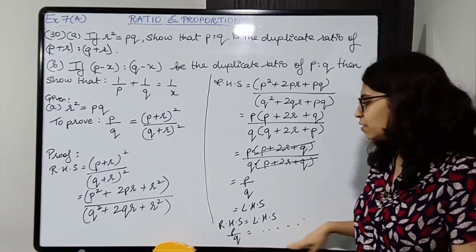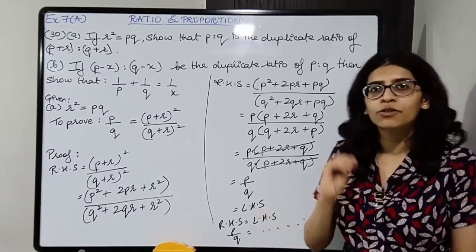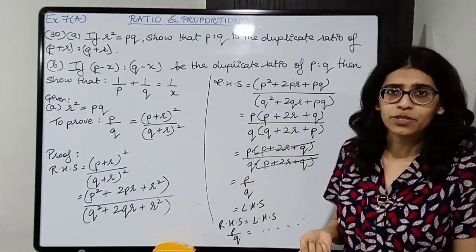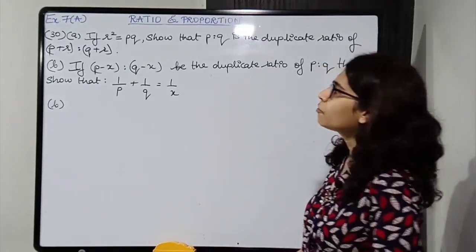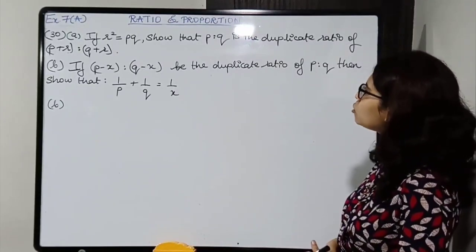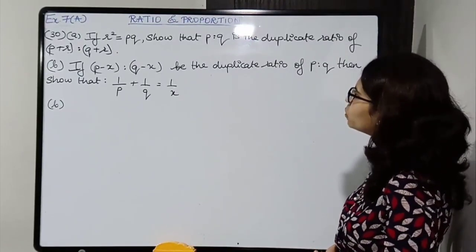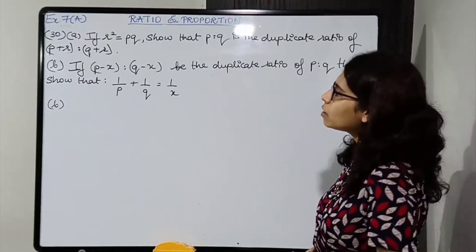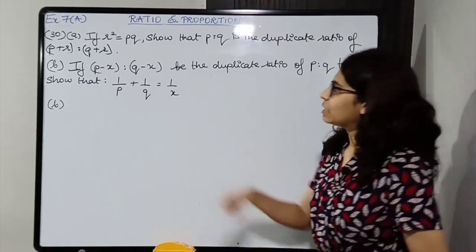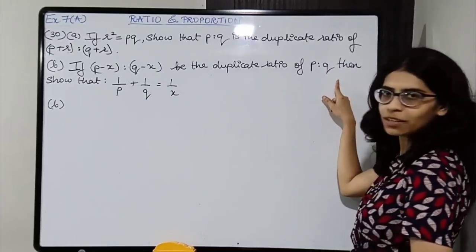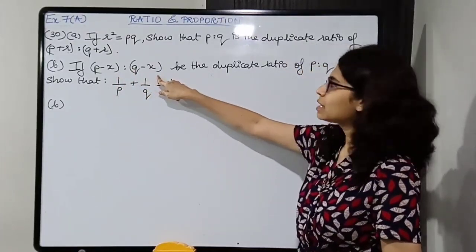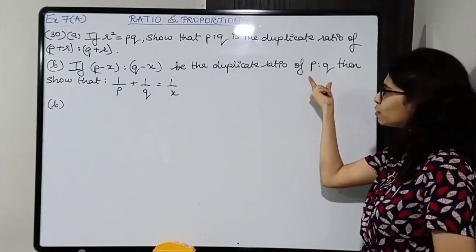On the right side, take PQ common — leaving P minus Q inside the bracket. P squared minus Q squared is of the form A squared minus B squared which equals A minus B into A plus B. So the left becomes X into P minus Q into P plus Q, and the right is PQ into P minus Q.